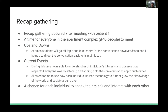After meeting with patient one and going through the checklist, everyone in the apartment complex — around eight to ten people — would meet for a time known as recap gathering. Jason would ask each individual about their ups and downs of the day. If anyone went off topic and tried to take control of the conversation, Jason would redirect it. Once each individual had their turn, Jason asked if anyone had current events to share. This allowed me to understand each individual's interests and see how respectful everyone was — listening and adding on to the conversation at appropriate times. Discussing current events showed me how each individual is able to utilize technology in a positive way, further growing their knowledge of the world.